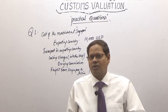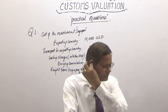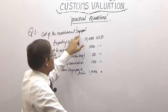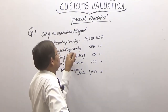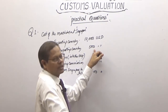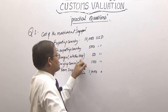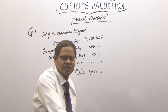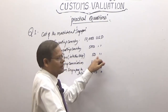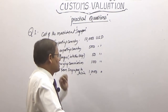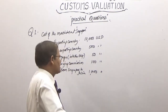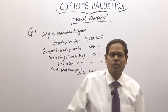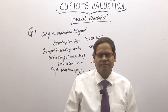The cost in Singapore is $10,000. Transport in the exporting country — that is, transport in Singapore — is $500. Loading charges into the ship are $50. Buying commission is the commission payable to the agent of the importer.